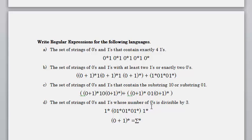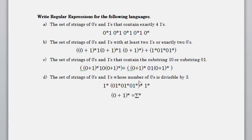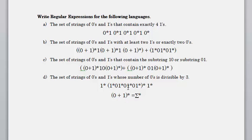The last example: the set of strings of zeros and ones whose number of zeros is divisible by three. We don't care how many ones we get, but whenever we get a zero it must appear in multiples of three. That's why we apply Kleene closure outside, using (1* 0 0 0 1*)* — with 1* in the beginning, middle, and end since it wasn't specified that zeros need to be consecutive.